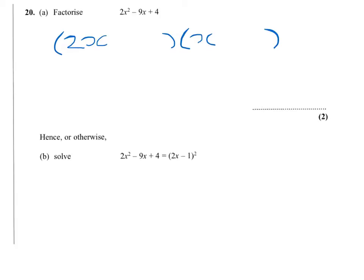I've got 4, and the 4 will come from either 1 and 4, or 2 and 2. I need to make 9 in the middle, and it needs to be a negative 9, but I need to have a positive at the end. I've got a positive at the end, negative in the middle, so I need 2 minuses.